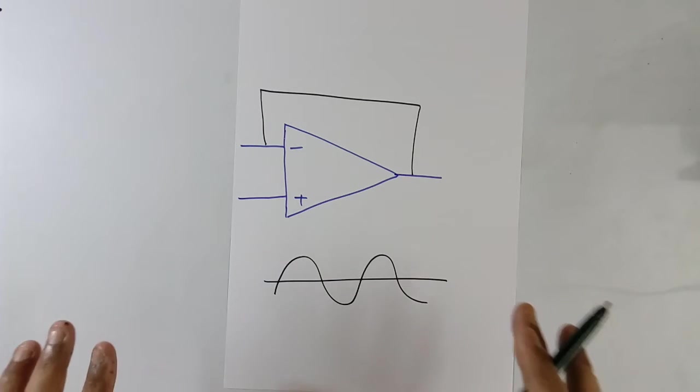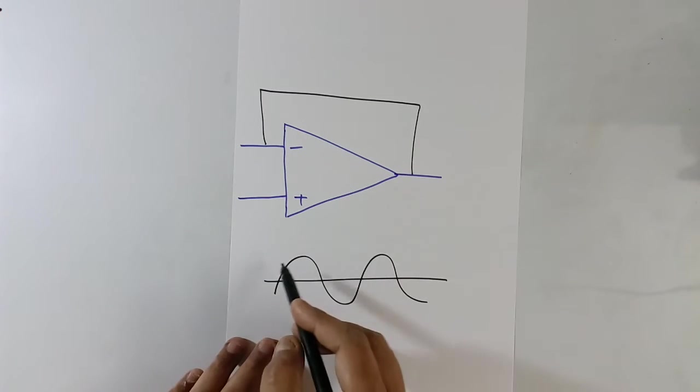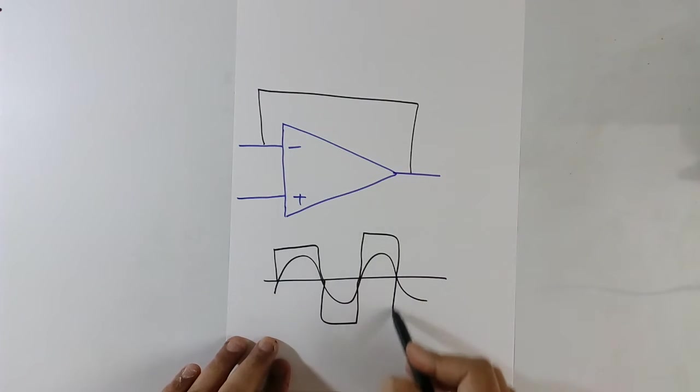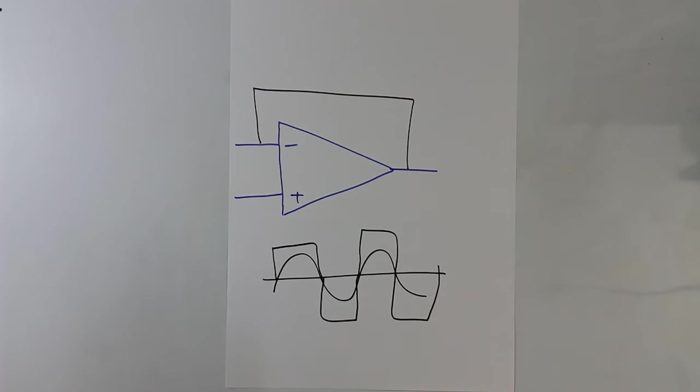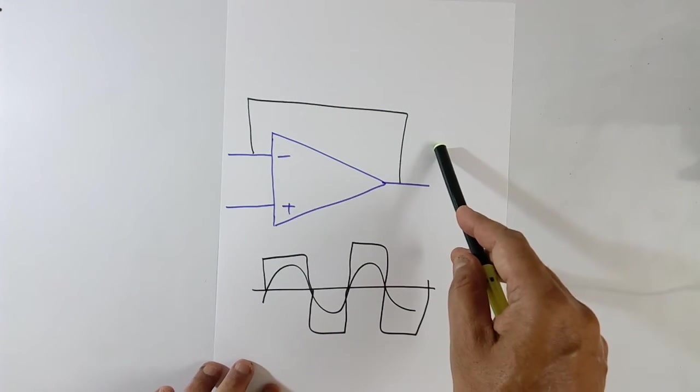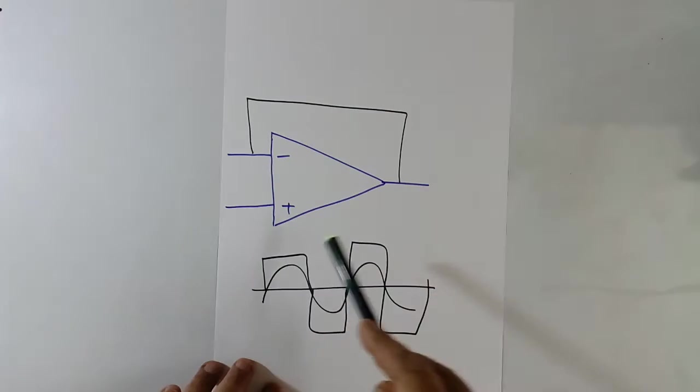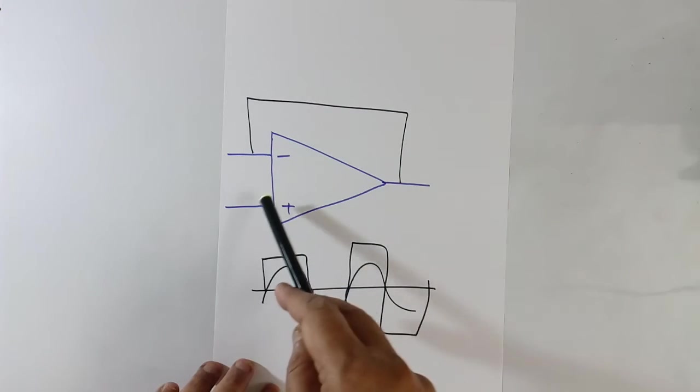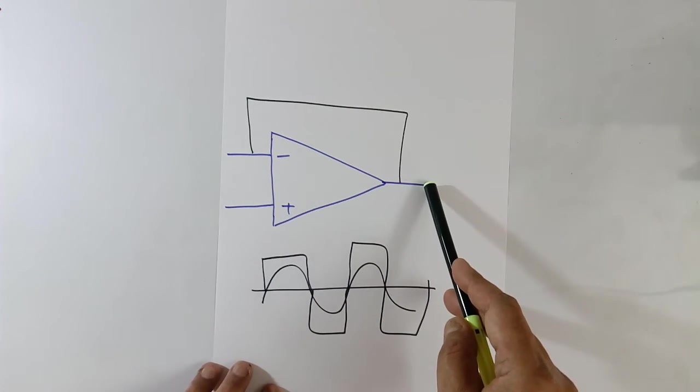In case of saturation range, output becomes like this. Output becomes square wave. Output will go either positive or negative depending on the input voltage. Input is positive, output will go positive. Input is negative, output will go negative.